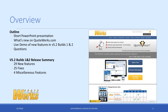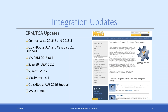To get started, version 5.2 includes 29 new features, 25 fixes, and 4 miscellaneous features — some smaller features we added as well. It also includes a bunch of CRM and PSA updates for integration to keep compatible with your systems. So if you are having any type of issue integrating QuoteWorks with your system, update to the latest version and that should resolve it.